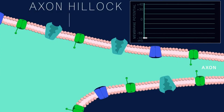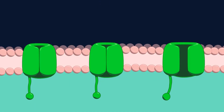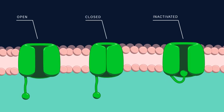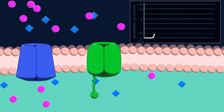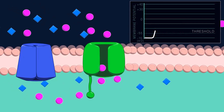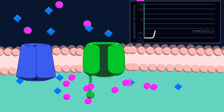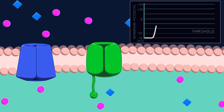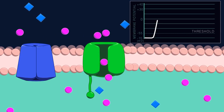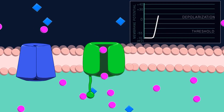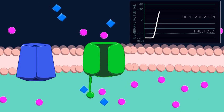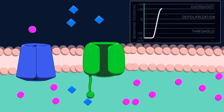When outside stimulation is large enough to bring the membrane potential in the neuron body up from minus 70 millivolts to the threshold voltage of minus 55 millivolts or higher, this triggers an action potential at the axon hillock, which then travels down the axon. Voltage-gated sodium channels have three states: open, closed, and inactivated. At rest, the sodium channel is closed. Once the cell membrane reaches the threshold voltage, the channel changes to an open position and sodium rushes into the cell because of the electrochemical gradient. As positive sodium ions enter the cell, the membrane potential becomes less negative and more positive as it approaches zero millivolts. This is called depolarization. Eventually the voltage gradient goes to zero and beyond, up to a positive 30 millivolts — this is called an overshoot.